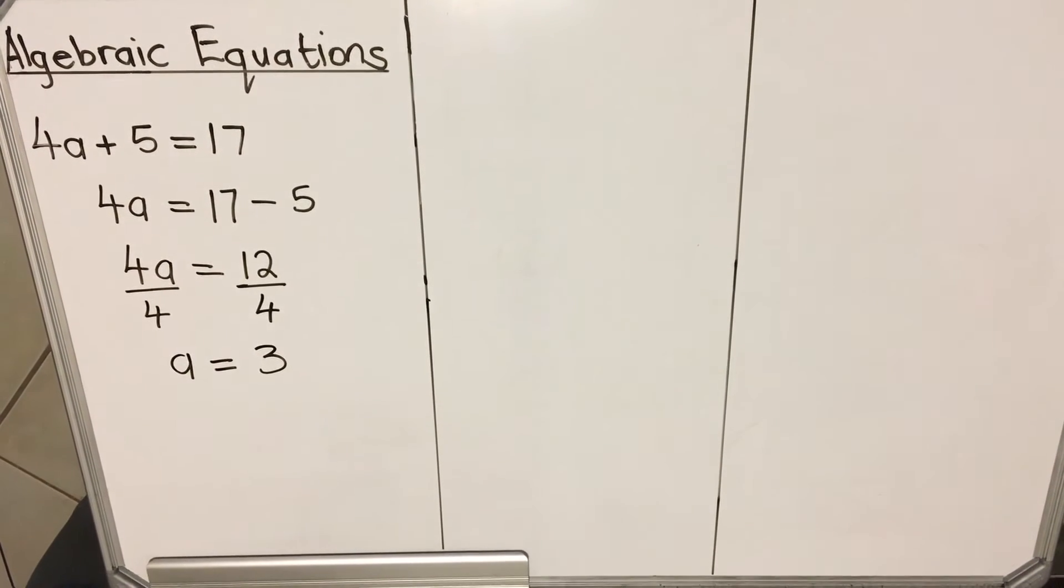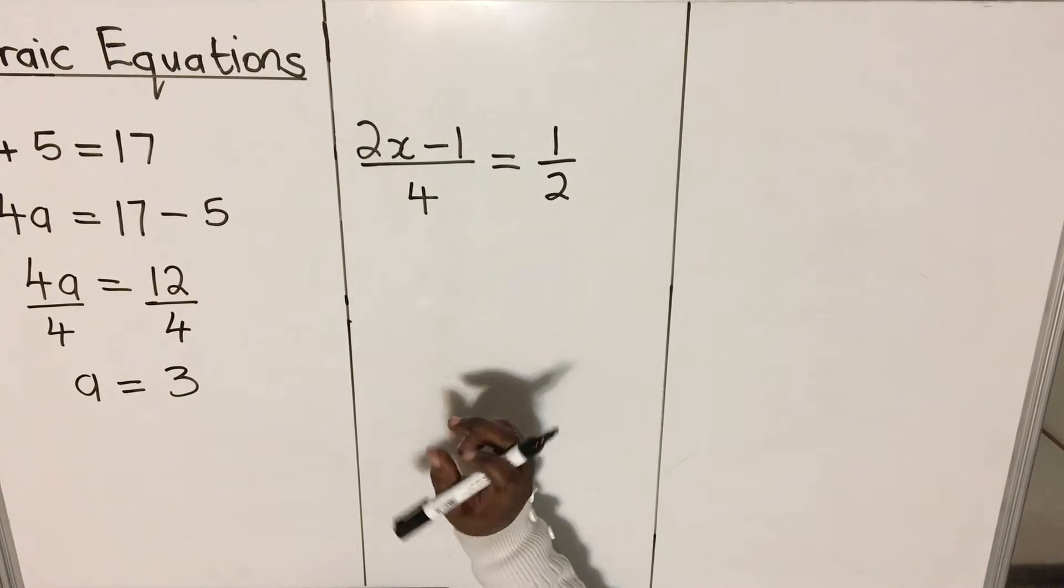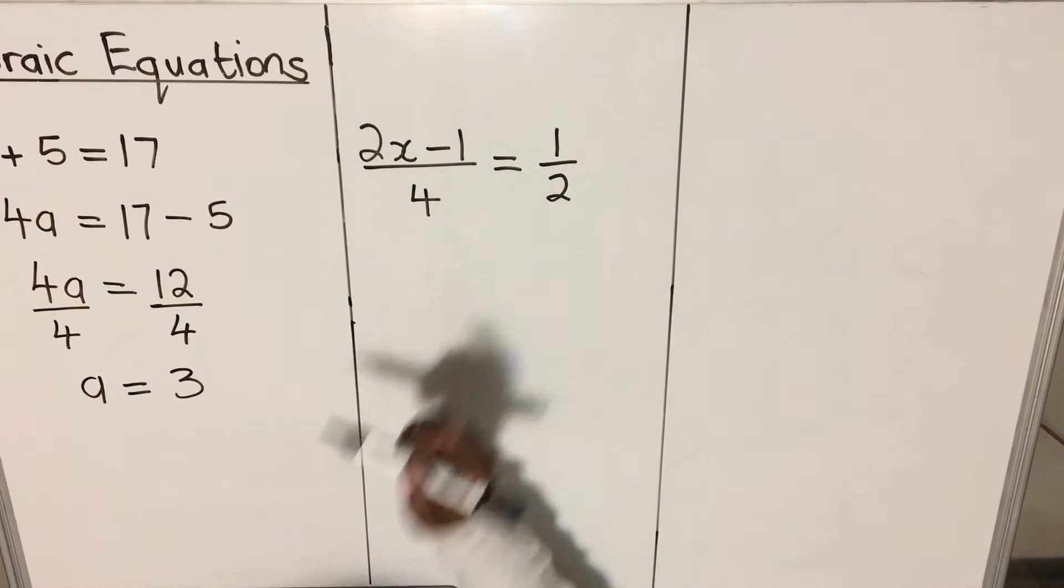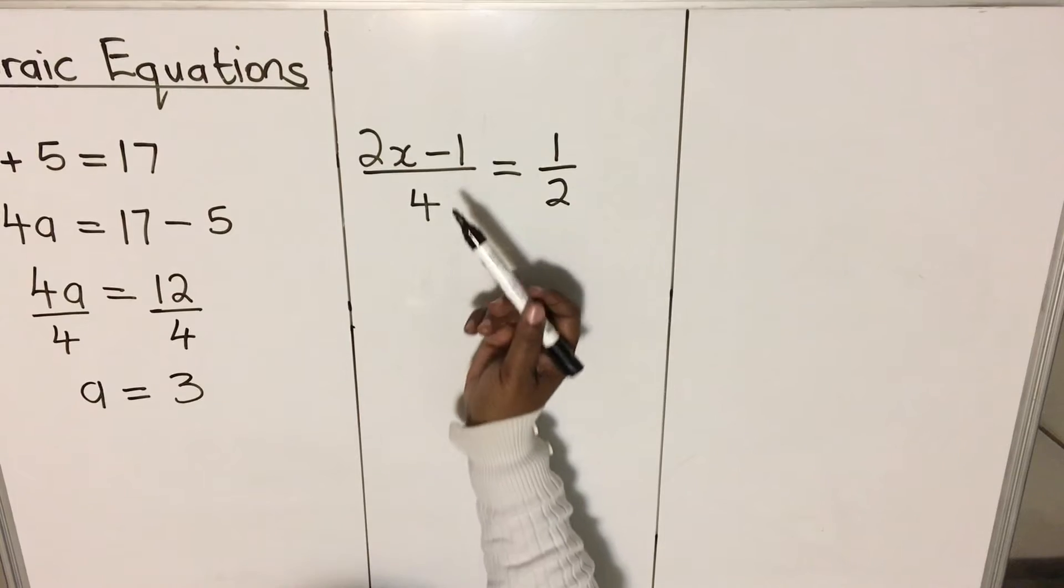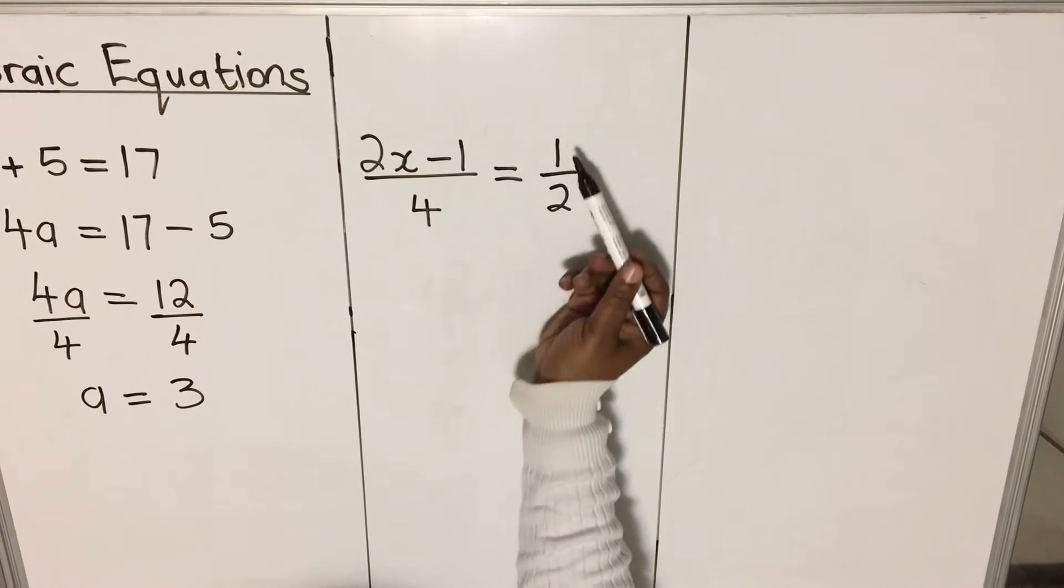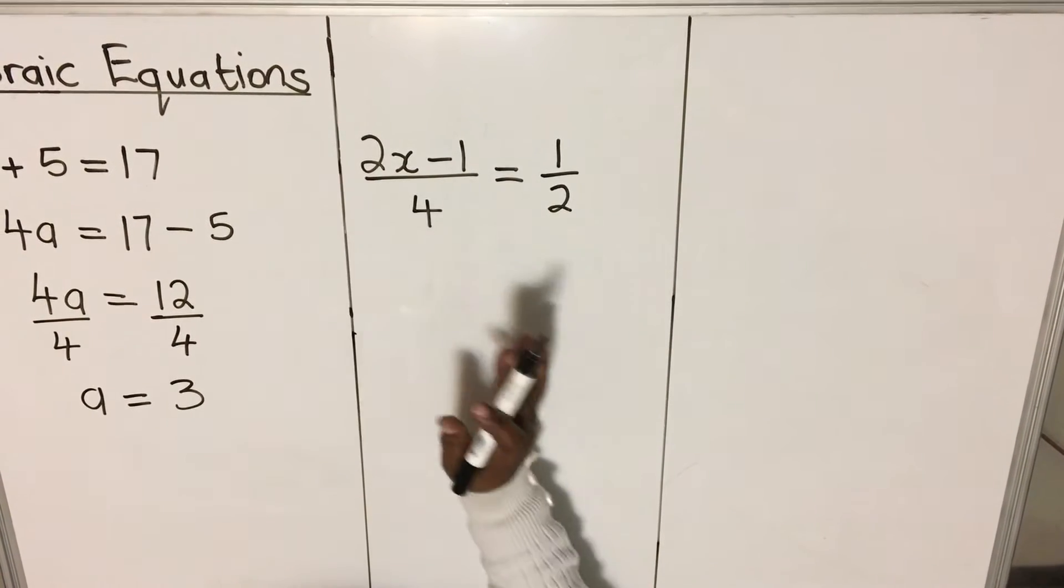Let's look at a different example. With this second example, we're dealing with fractions. But what is important here is to notice that I have one fraction and one fraction. I don't have any other thing.